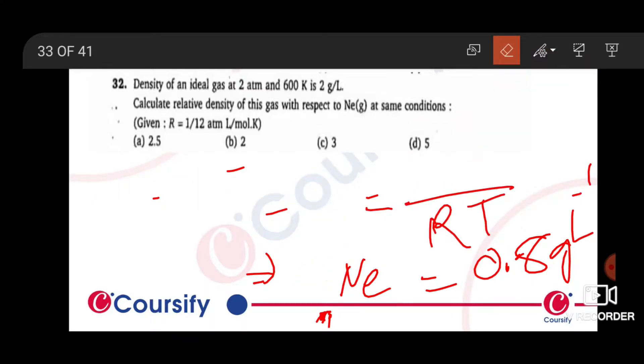Then we have the ideal gas density, which is already provided as 2 gram per liter.